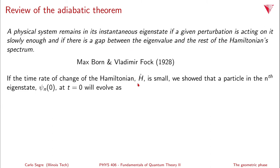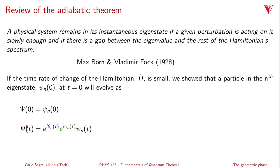So if the time rate of change of the Hamiltonian Ḣ is small, we showed that the particle in the n-th state ψₙ(0) at time equals zero will evolve as ψ(t), which is equal to e^(iθₙ(t)) e^(iγₙ(t)) — two phase factors — times ψₙ(t).